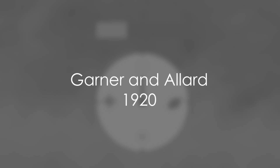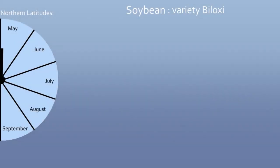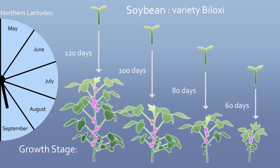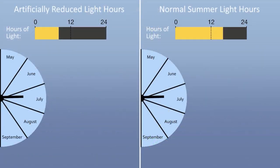For instance, let's consider the soybean variety Biloxi. No matter whether it is planted in spring or in summer, if it is growing outdoor in northern latitudes, it will always flower in September. And this happens every year, regardless of the varying temperature conditions or rainfalls. That's how they started suspecting that the relative length of day and night may determine the flowering time.